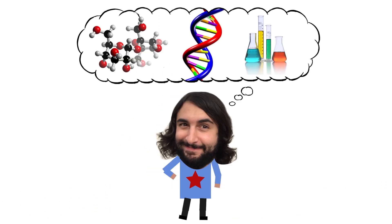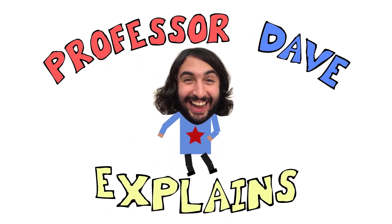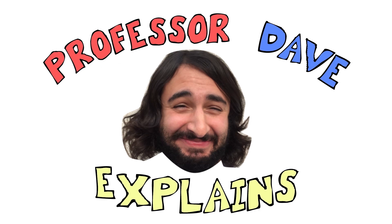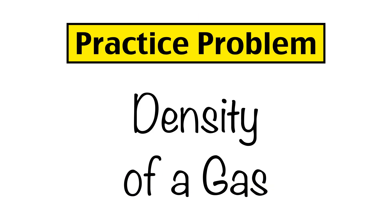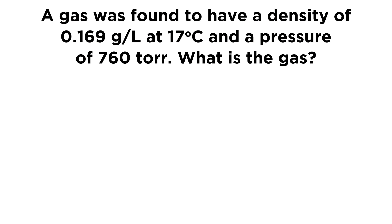Professor Dave Explains. Let's try some calculations regarding the density of a gas. A gas was found to have a density of 0.169 grams per liter at 17 degrees Celsius and a pressure of 760 torr. What is the gas? We are going to need to do some calculations regarding ideal gases. If you need to review that concept, go ahead and check out my tutorial on ideal gases first, and when you're ready, give this a try.